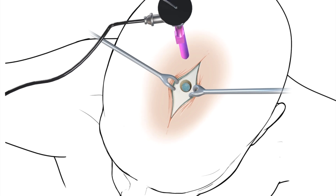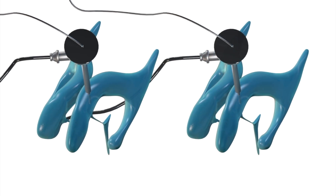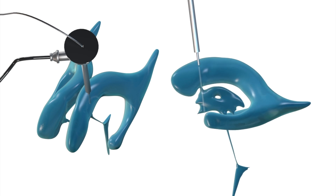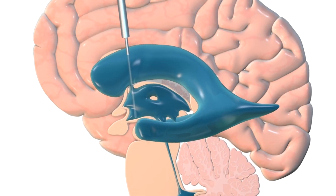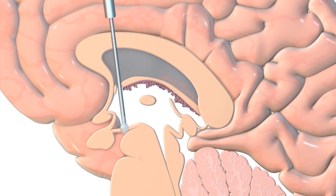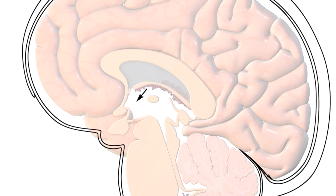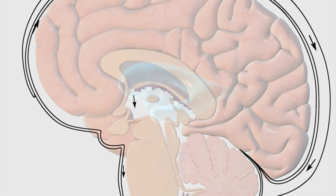Once the burr hole is created, we introduce an endoscope — a small camera — through a peel-away sheath using neuro-navigation. Through that burr hole, we are able to insert the camera into the brain and down into the lateral and ultimately the third ventricle. We pass instruments through the rigid endoscope where we create an opening or an ostomy at the base of the third ventricle. This allows a new outflow tract for cerebrospinal fluid to exit the ventricular system, relieving increased intracranial pressure and offering a final solution for obstructive hydrocephalus.